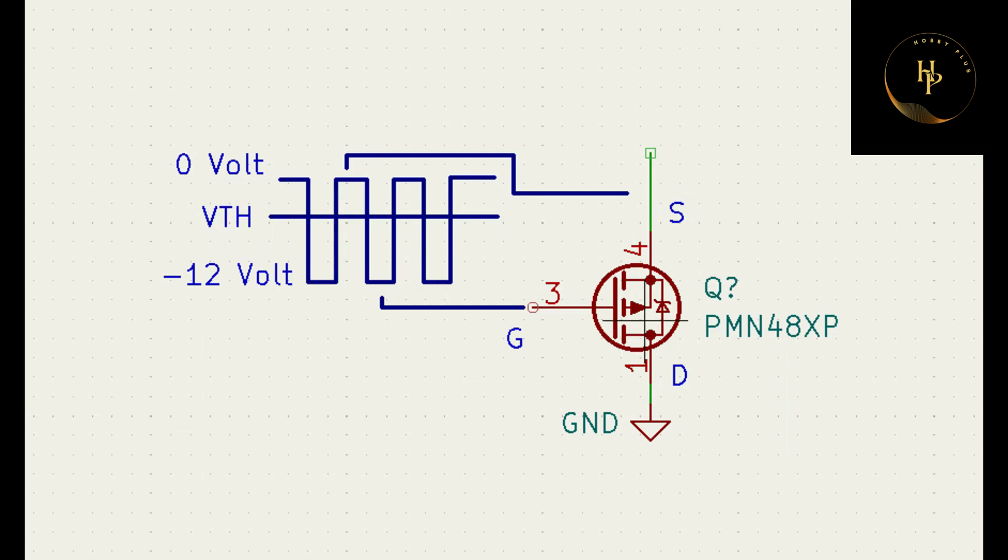It is a P-Channel MOSFET, source, drain and gate. Pulse come from pulse generator to gate and source. There is a negative pulse from 0 to minus 12 volt.